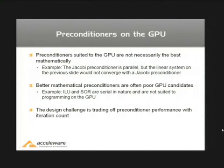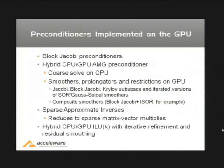So there's a design tradeoff that needs to be taken into account — trading off preconditioner performance with iteration count and figuring out, in the end, what is going to produce the fastest solution. The preconditioners that we have implemented on GPU range from very simple ones like Jacobi, diagonal scaling, and things like that, but most of the preconditioners that we ended up doing with commercial and practical value are hybrid CPU-GPU preconditioners.